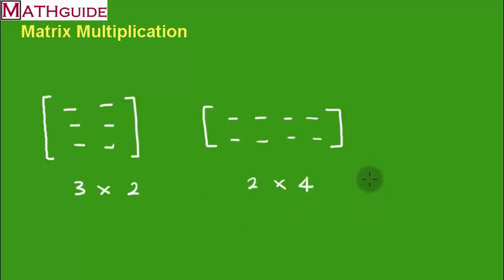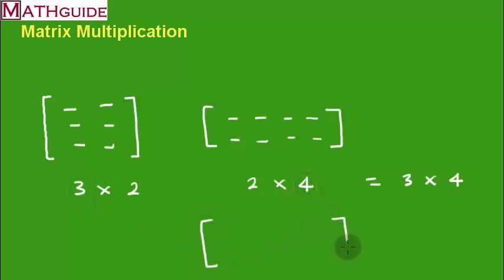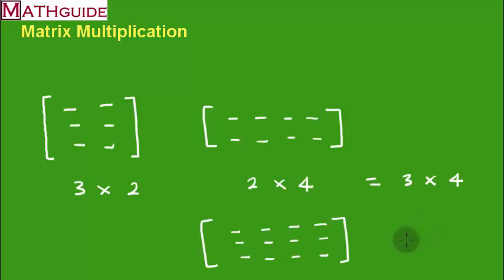Since those two inside numbers match, we know we can multiply them. If you're wondering what the size of the resulting matrix will be, that's easy to determine: use the outside numbers. The result of multiplying a 3×2 by a 2×4 will be a 3×4 matrix — three rows and four columns. In our next section we'll talk about how to actually carry out this multiplication.